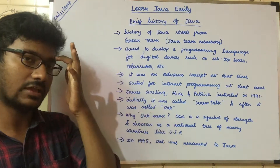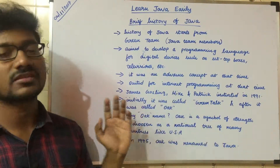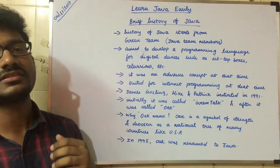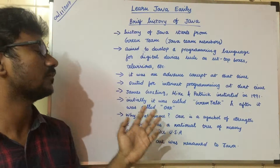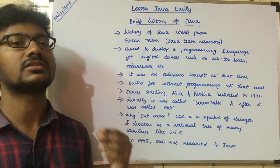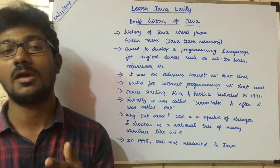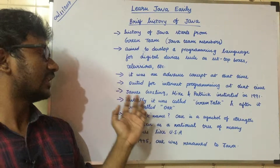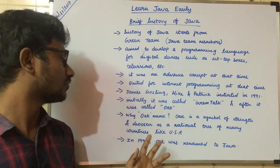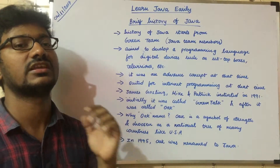As time went on, the name was changed to Oak language. The reason why they preferred Oak is that it's a symbol of strength — many countries treat the Oak tree as a national symbol. That's the reason why they named the programming language Oak, as they thought it would be the strength and pillar for other programming languages. But due to some reasons, the name was changed from Oak to Java, and we will talk about those reasons in the upcoming video.